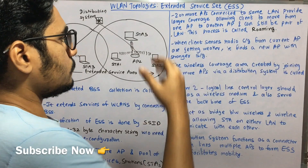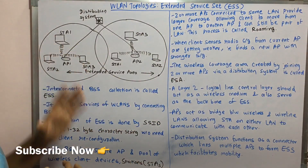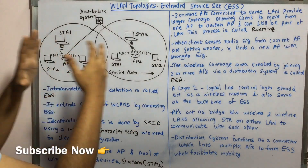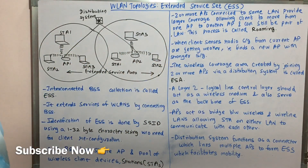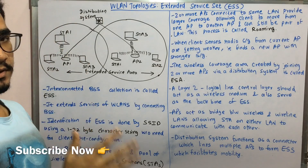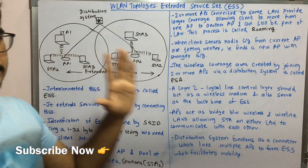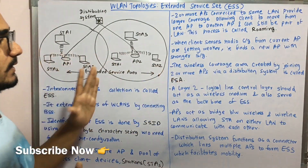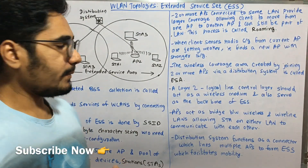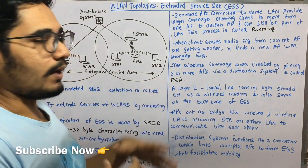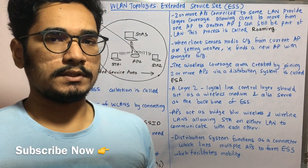Handoff essentially plays a major role in the ESS. The wireless coverage area formed by joining two or more APs with the help of a distribution system is called the Extended Service Area, or ESA.